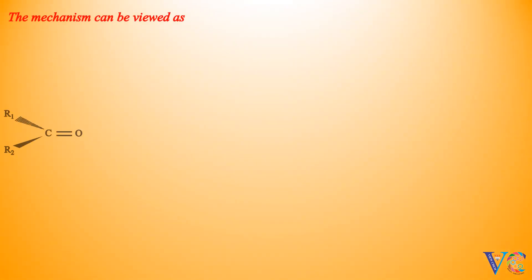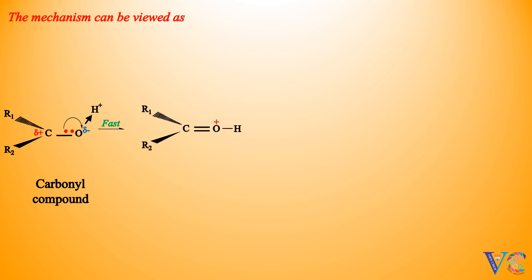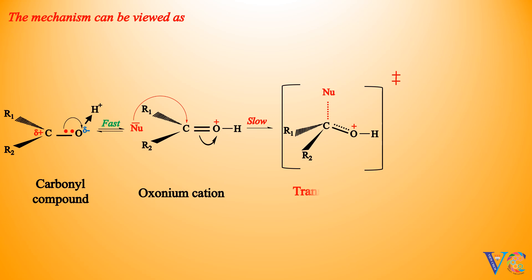The mechanism can be viewed as: carbonyl compound → attack of proton on partially negatively charged oxygen → formation of oxonium cation → attack of nucleophile on the carbon of the oxonium ion → formation of transition state → formation of product.